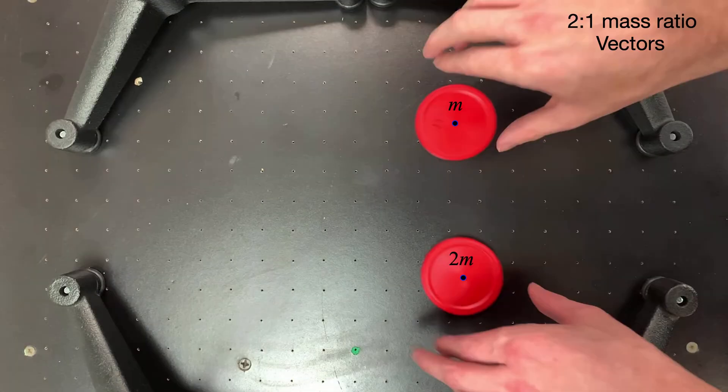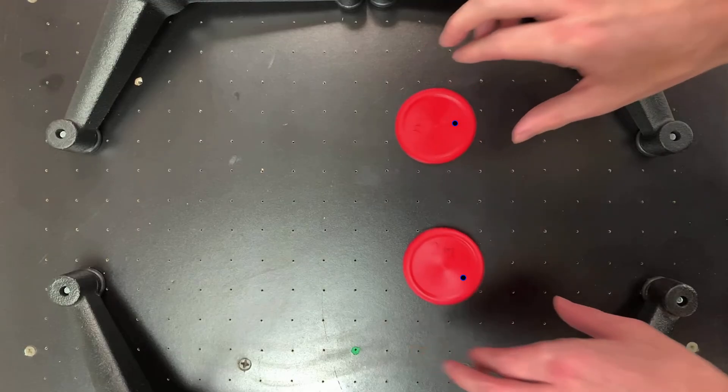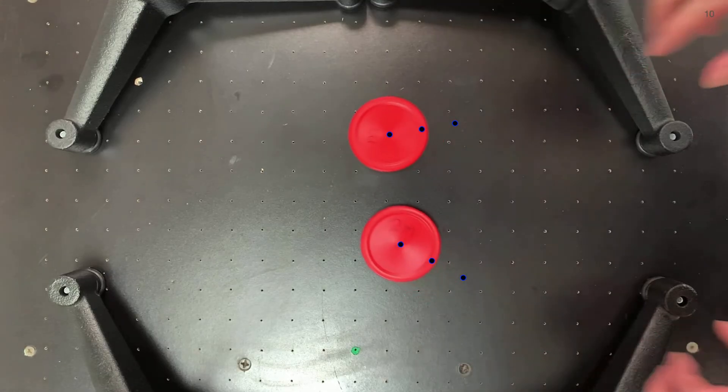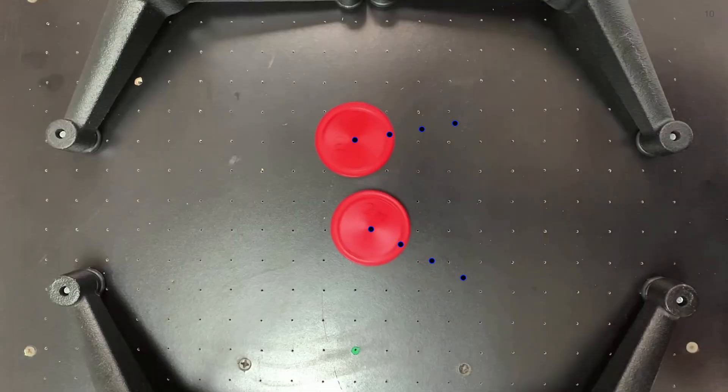Using the same strategy as earlier, we'll now place dots every 10 frames at the centers of the pucks. And we'll add velocity vectors and momentum vectors as before.